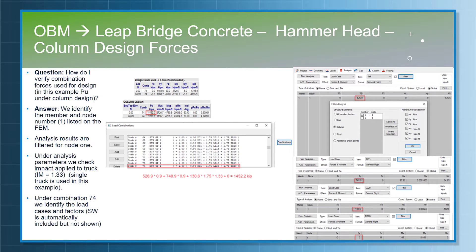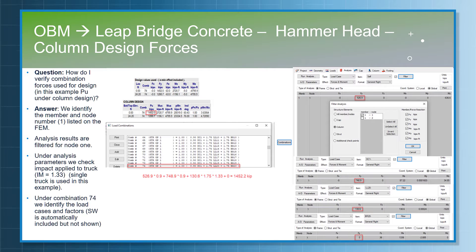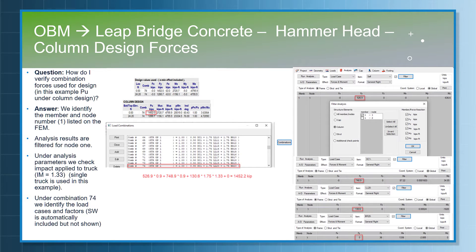In the load combination dialog box, based on the type of combination seen under the column design — which is 74 — the user can note down the load cases, the load factors, and other information. They can get the values from the analysis tab and multiply with the corresponding load factors to get the final Pu load or the final vertical load. This is how users can cross-verify the values shown in the column design, footing design, or pile cap design.